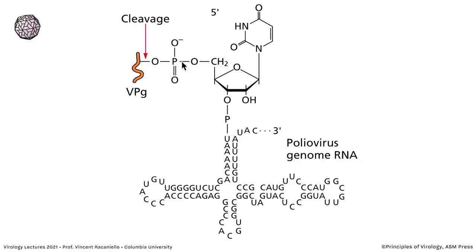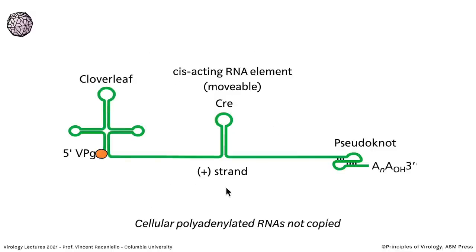At the very 5' end of the RNA is a protein called VPg — a 22 amino acid viral protein linked by a phosphodiester bond to the first base in the RNA, which happens to be a U. That protein is a primer for RNA synthesis. The entire genome has a cloverleaf structure at the 5' end comprising three stem-loop structures, another stem-loop interior called the cis-acting RNA element (Cre), and a pseudoknot at the 3' end. These structures ensure that the RNA polymerase only copies viral RNA and not cellular RNAs — cellular RNAs are never copied even with abundant polymerase.